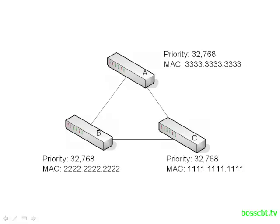The priority value is configurable, so let's see what happens when we manually adjust it. Let's say we really wanted switch A to become the root switch, so we configured a priority value of 8192. In the election process, whenever switch A and switch B or switch A and switch C would compare BPDU values, switch A would win and ultimately become our root bridge. The reason is that the priority value is compared first in the Bridge IDs, so as soon as you have a winner based on priority, the election is over — you don't have to go to the MAC address. 8192 is lower than both of the other two default values, and switch A would win pretty easily.